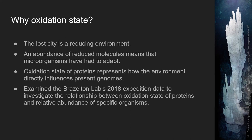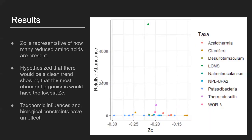Now I will be talking about the relationship between oxidation state of proteins and the relative abundance of specific organisms. Here I am showing my results. It was hypothesized that organisms with the lowest Zc would have the highest relative abundance due to environmental pressures.